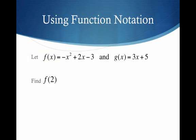I'm going to give you two different functions here. We have f of x, which is this negative x squared plus 2x minus 3, and g of x, which I've defined as 3x plus 5. First, I'm asking you for f of 2. Keep in mind how I'm reading it, f of 2. What am I telling you to do? I'm telling you to replace x with 2.